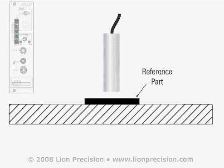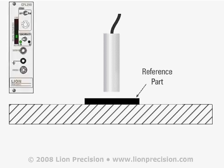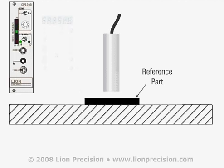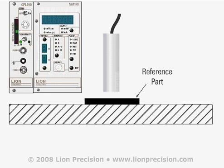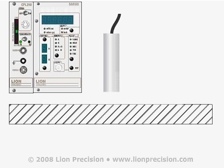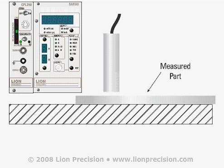To perform a single-channel thickness measurement, first place a conductive part of known thickness on the reference surface. Then adjust the sensor to measure the top surface of the part. The sensor should be positioned near the center of its measurement range to allow for positive and negative deviations from the reference measurement. Adjust the sensor output for zero volts, or a displayed reading of zero if a measurement display is being used. Then replace the reference part with a part to be measured and read the deviation in thickness from the display or calculate the deviation from the output voltage.